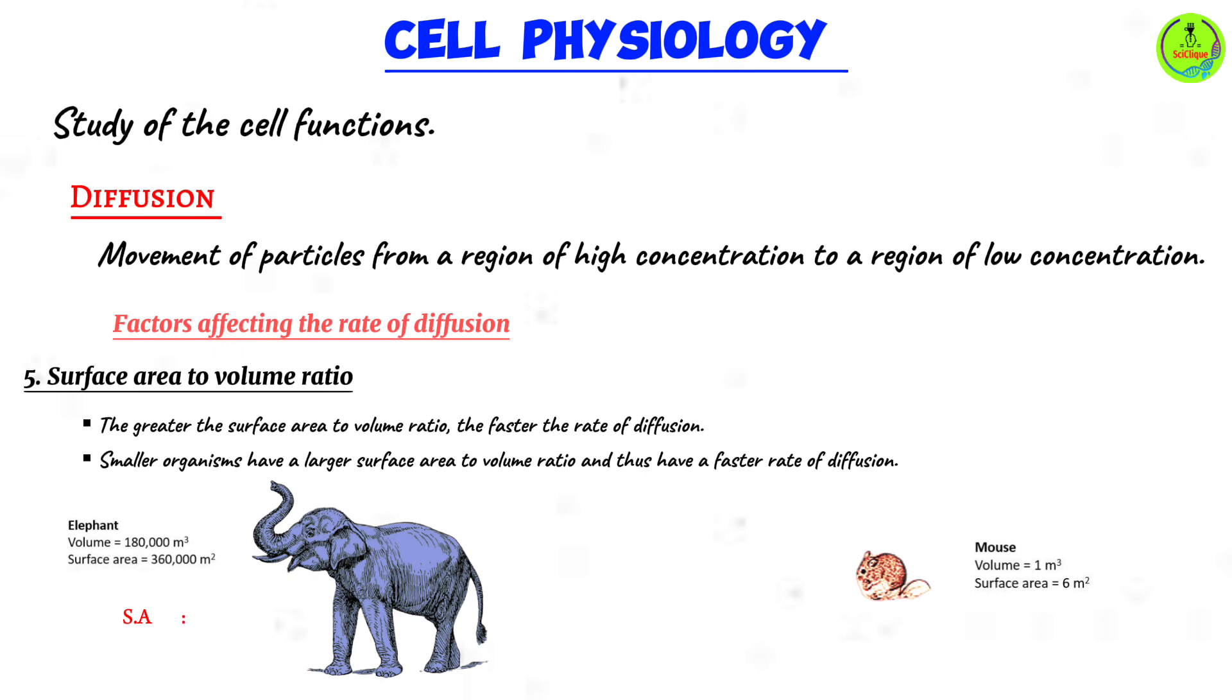Which animal is going to have a larger surface area to volume ratio? Yes, it's actually the rat. Why? Because the rat is smaller and therefore it exposes a larger surface area to volume ratio.